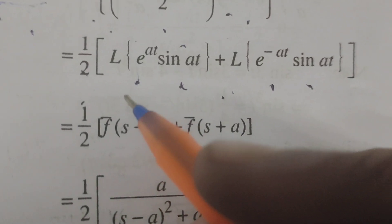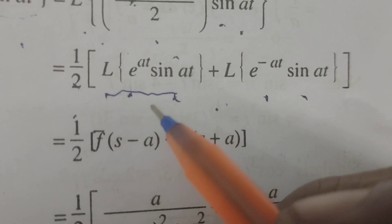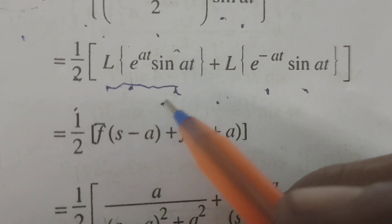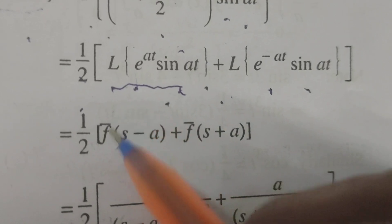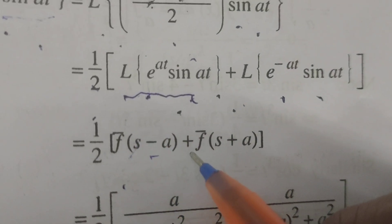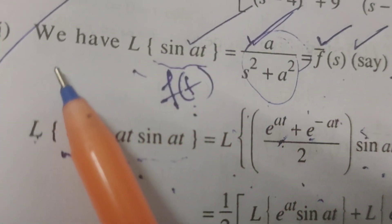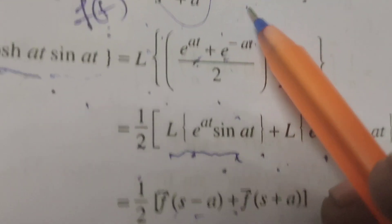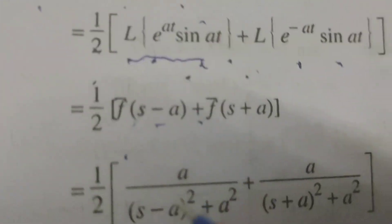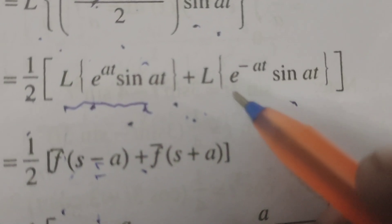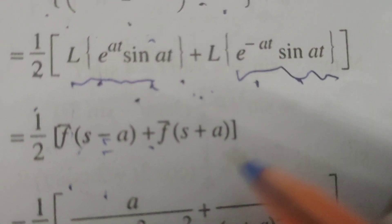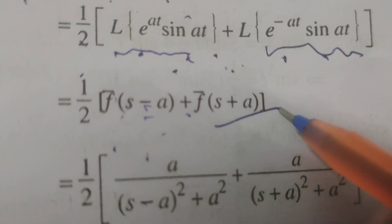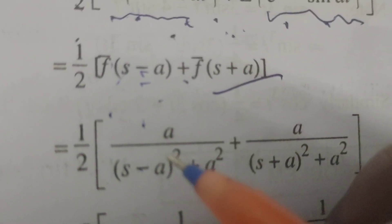That is (1/2) into: Laplace transform of e^(at)·sin(at) equals f̄(s-a), since the Laplace transform of sin(at) is f̄(s). So e^(at)·sin(at) gives f̄(s-a). Also, using the same formula, e^(-at)·sin(at) gives f̄(s+a).